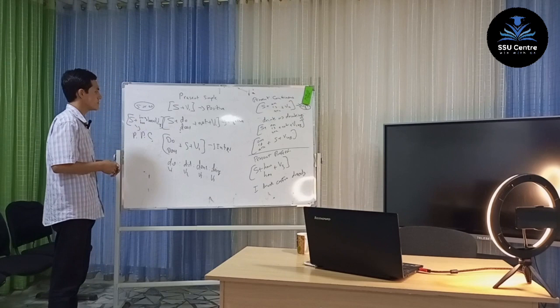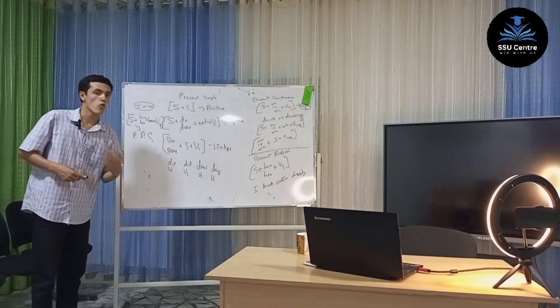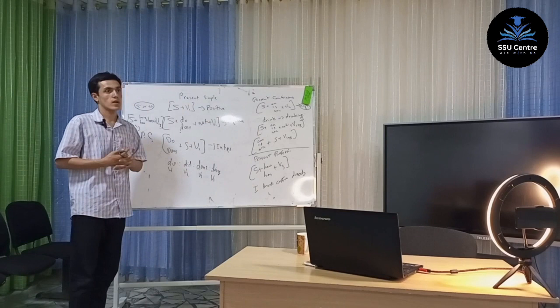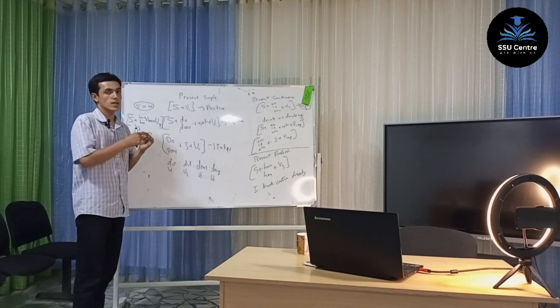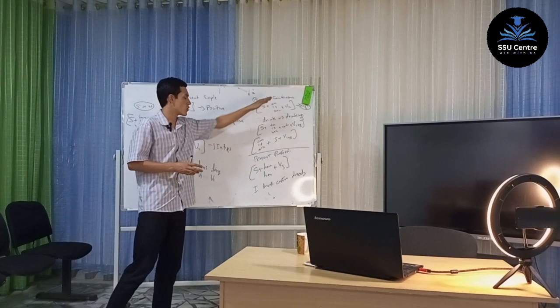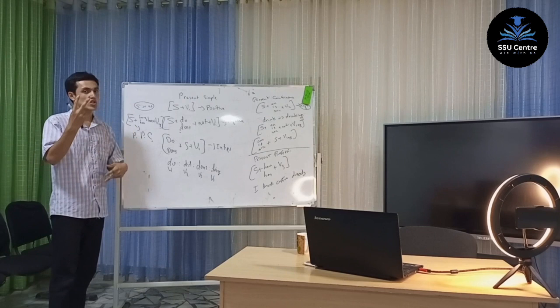All of the tenses have their own special time phrases. For example, we use 'always, never, frequently, seldom, rarely, occasionally' with present simple. We use 'now, today, this weekend, at the moment, right now' with present continuous. We use 'already, yet, still' with present perfect. For present perfect continuous, the two common time phrases are 'since' and 'for.'